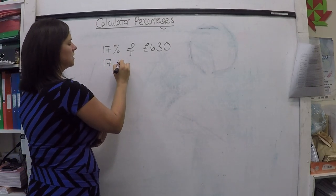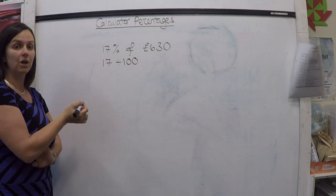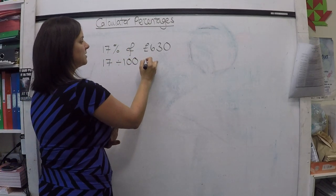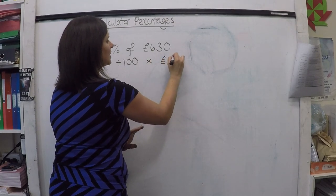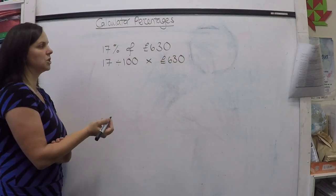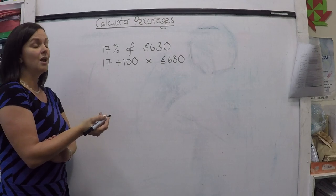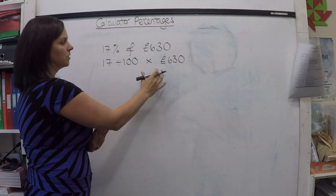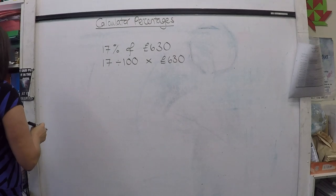In maths, 'out of' means divided by 100, and 'of' means multiplied. So we can actually calculate 17% of £630 by doing 17 divided by 100 multiplied by 630.